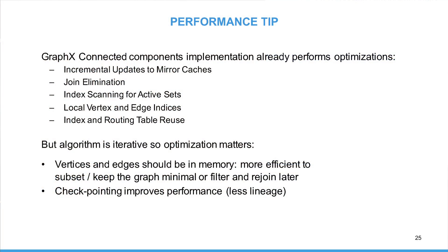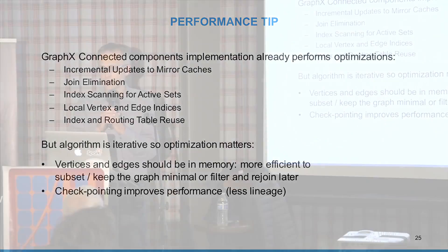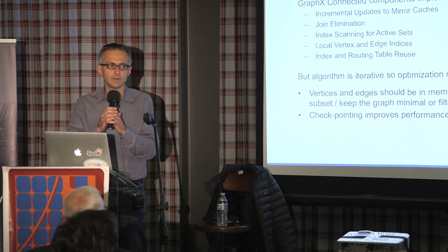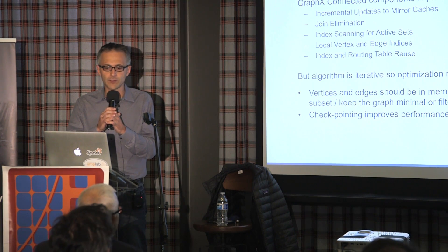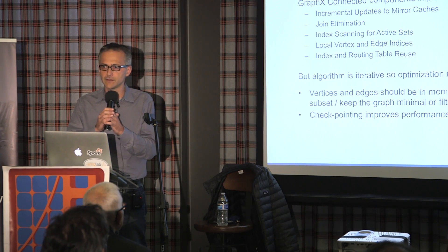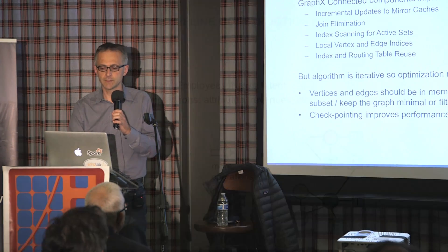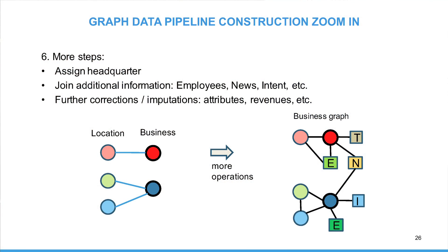We also have additional optimizations. On performance: you can try to keep information in memory — like vertices and edges — to keep the graph minimal and retrieve additional information later. Checkpointing is also a way to improve performance because in Spark, connected component is a very iterative algorithm that keeps the lineage in memory; checkpointing reduces lineage and improves performance. Now that we have a graph of linked locations to business, we can do additional steps such as assigning the headquarter, and joining additional information that belongs to the business versus individual locations, like revenue, headcount, and headquarters.